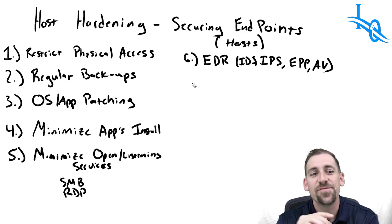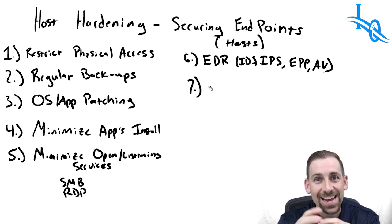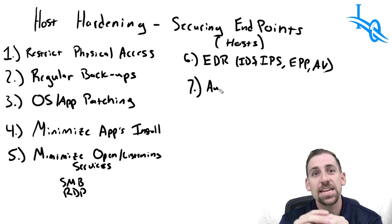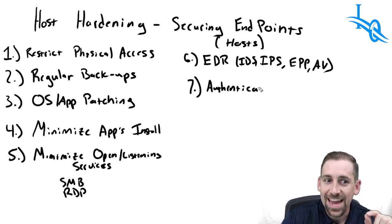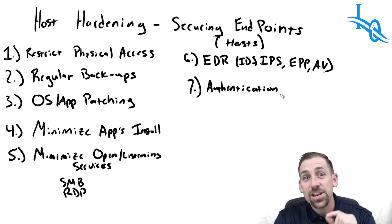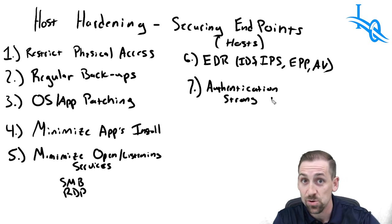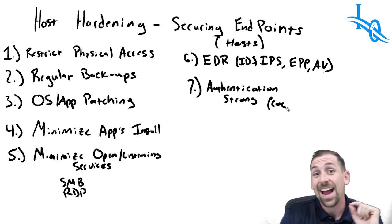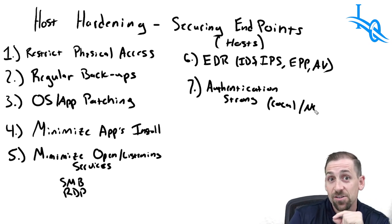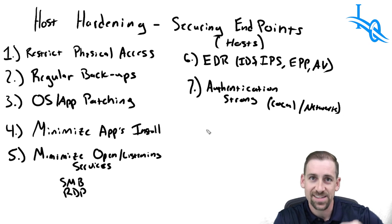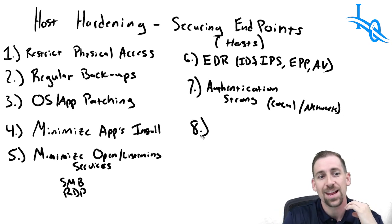Number seven is configuring local or network-based authentication. There are any number of ways to configure authentication, but requiring strong authentication with strong passwords, strong password policies, and multi-factor authentication is extremely important and represents a primary component of host hardening.